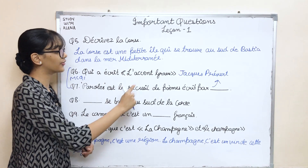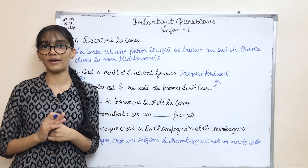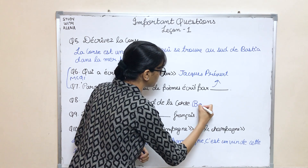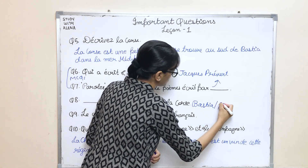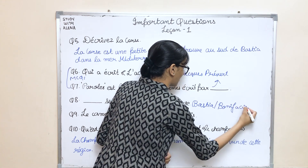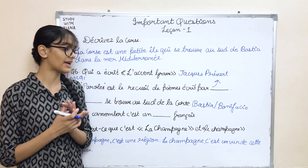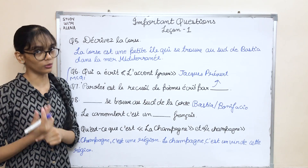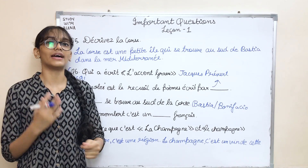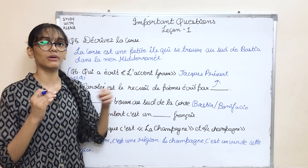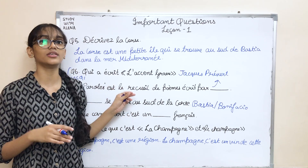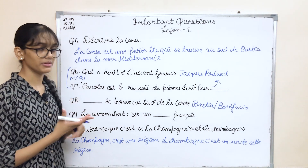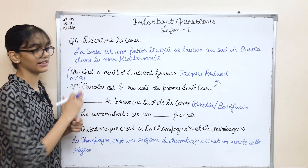The eighth question is: 'Dash se trouve au sud de la Corse.' This is a bit problematic because the answer differs from school to school and teacher to teacher. Some say the answer is Bastia while others say Bonifacio. According to me it should be Bonifacio, but in books like Get Ready the answer is Bastia. I request you all to ask your teachers which answer will earn you marks in your boards — it can be either Bastia or Bonifacio. Please clarify this with your teachers.